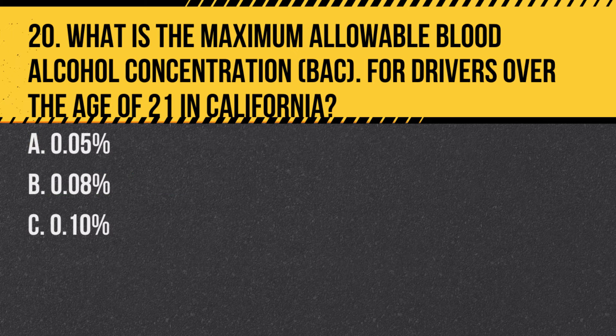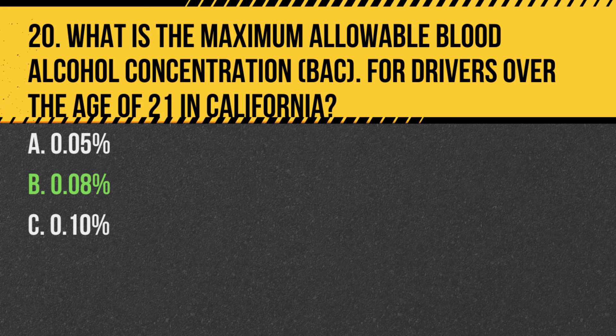Question 20. What is the maximum allowable blood alcohol concentration for drivers over the age of 21 in California? A. 0.05%. B. 0.08%. C. 0.10%. Answer: B. 0.08%. Driving with a BAC of 0.08% or higher is illegal for drivers over 21 in California.